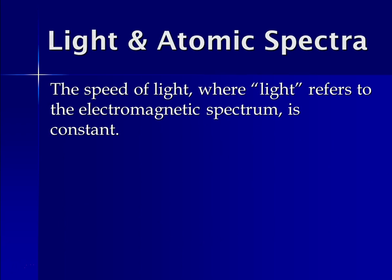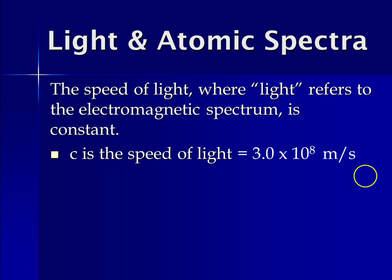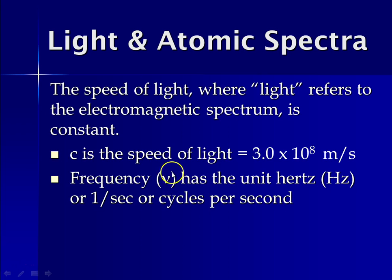So the speed of light, where light refers to the electromagnetic spectrum, we said is a constant. And c is the unit that we use for the speed of light. And c is what I said on the previous slide, three times ten to the eighth meters per second. The frequency, we use the Greek letter nu for frequency. And frequency, we said, is how many waves pass a point per second. And the unit that we use for it is called the hertz. It's abbreviated Hz, or one over seconds. So again, it's cycles per second.